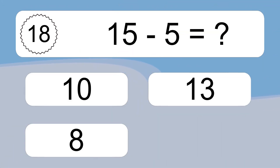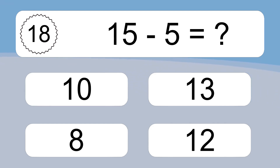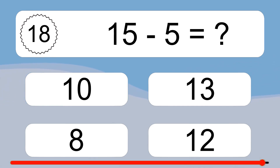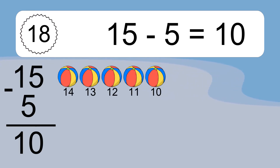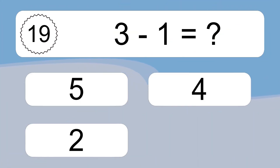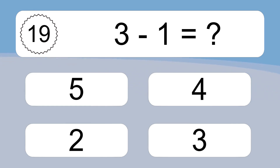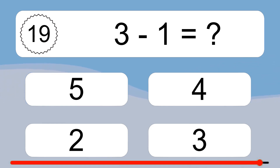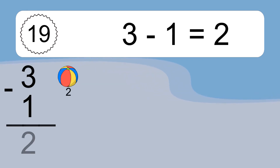15 minus 5 equals what? 15 minus 5 equals 10. Let's count it: 14, 13, 12, 11, 10. 3 minus 1 equals what? 3 minus 1 equals 2. Let's count it: 2.